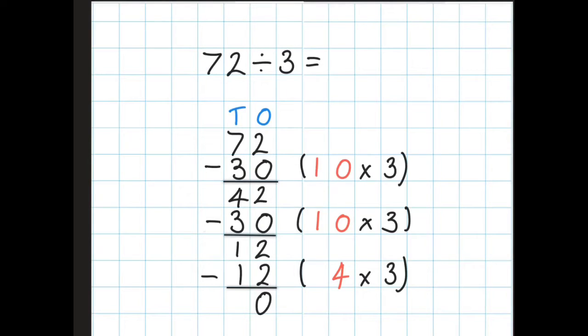So we took off 10 chunks of 3, 10 more chunks of 3, and 4 chunks of 3. So I've got 10 add 10 add 4 equals 24. So 72 divided by 3 is 24.